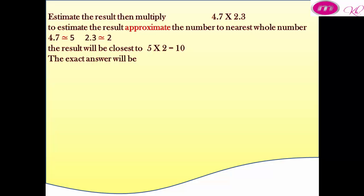Now make the exact answer. 4.7 becomes 47 and 2.3 becomes 23. Multiply them together, then place the decimal point by counting digits in the first and second numbers. The result is 10.81.